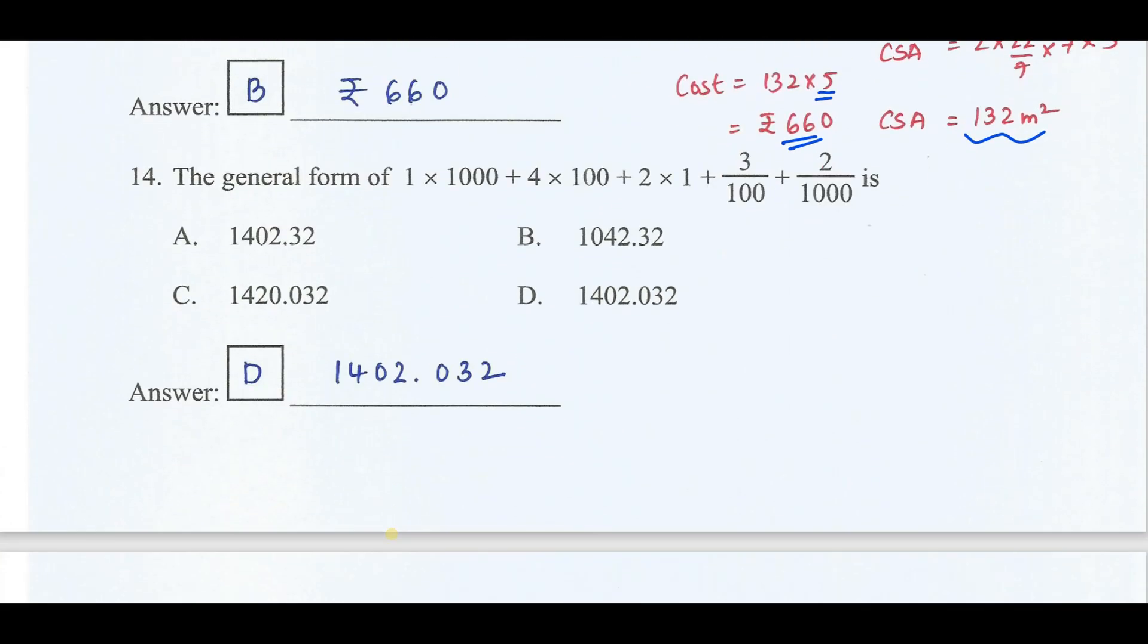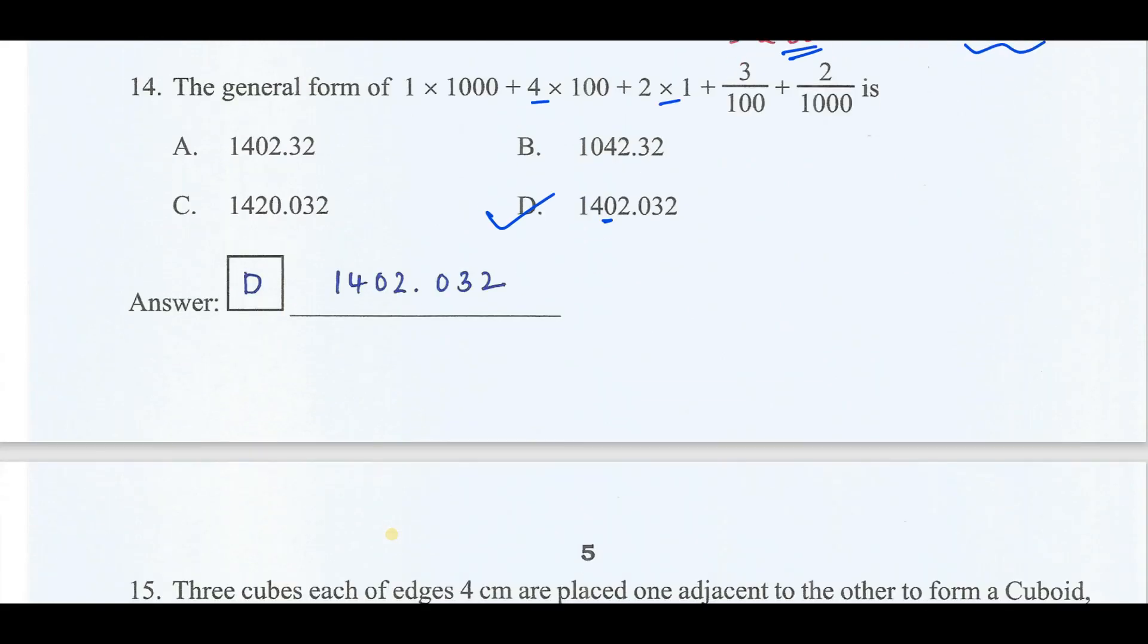The general form of 1 into 1000 plus 4 into 100 plus 2 into 1 plus 3 by 100 plus 2 by 1000 is option D: 1402.032. Units, tens is missing therefore it is 0, hundreds, next 1000, 3 by 100 is 0.03, 2 by 1000 is 0.002. Therefore the decimal number is 1402.032.